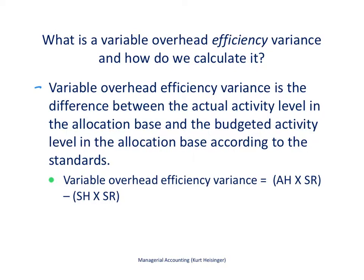The variable overhead efficiency variance is the difference between the actual activity level and the budgeted activity level in the allocation base. In this example, we are using direct labor hours as our allocation base, which tends to be common — though we could use machine hours or some other form. The efficiency variance measures efficiency related to the allocation base: what were our actual direct labor hours versus our budgeted direct labor hours.